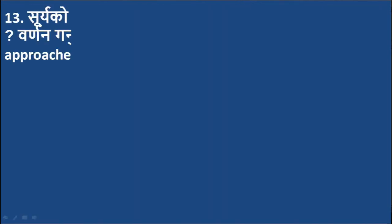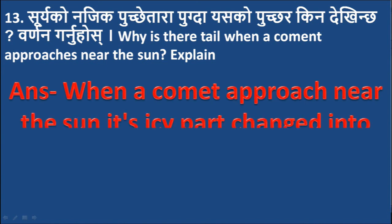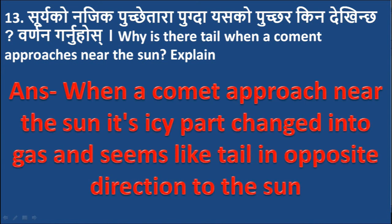Question 13: Why is there a tail when a comet approaches near the sun? Explain. Answer: When a comet approaches near the sun, its icy part changes into gas and appears like a tail pointing in the opposite direction to the sun.